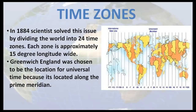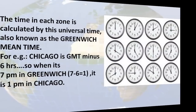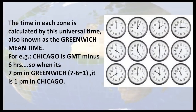Greenwich, England was chosen to be the location for universal time because it is located along the prime meridian. The time in each zone is calculated by this universal time, also known as the Greenwich Mean Time. For example, Chicago is GMT minus 6 hours. So, when it is 7 pm in Greenwich, it is 1 pm in Chicago.